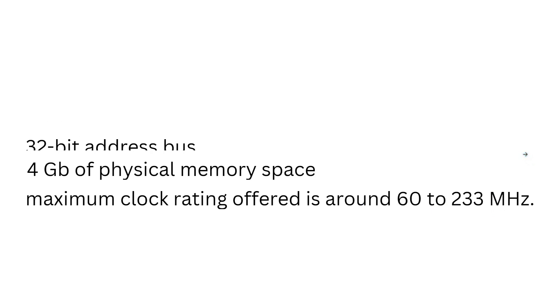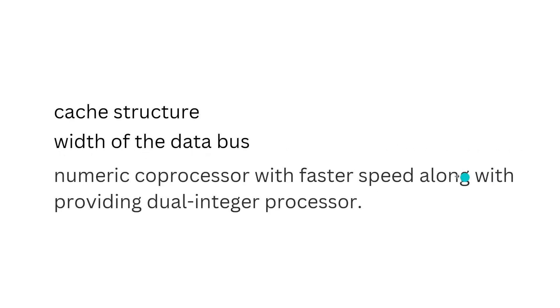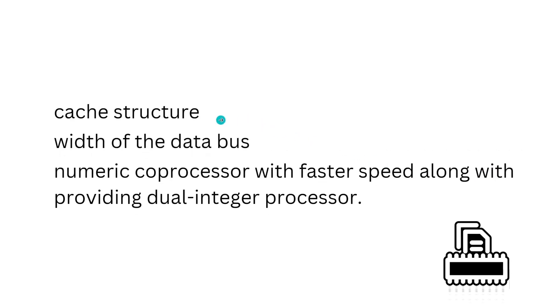The Pentium processor is also considered an advancement of the 80386 and 80486 microprocessors. Basically, Pentium has included modifications related to cache structure, the width of the data bus, and a numeric coprocessor with faster speed, along with providing a dual integer processor.